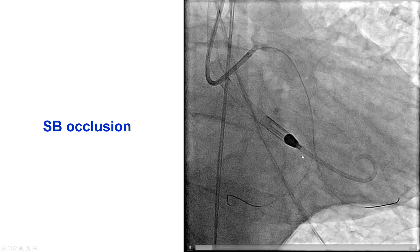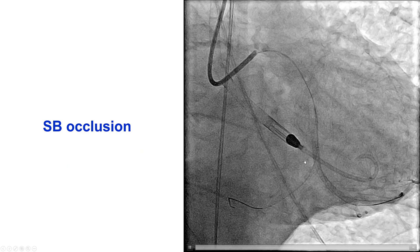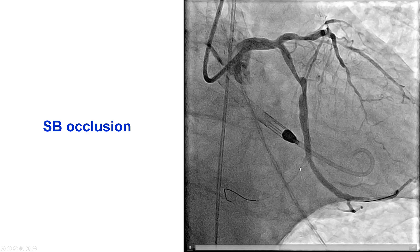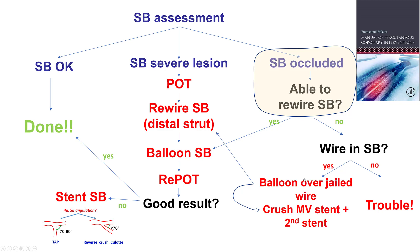The stent was deployed, and as we feared, unfortunately we did lose the side branch. But we did have a guidewire into the side branch indicating the location of the vessel. This is a case of a provisional in which the side branch becomes occluded after stenting the main vessel. The next step is to rewire the side branch, and if we can, perform a balloon inflation — and if that is good, then we're done.